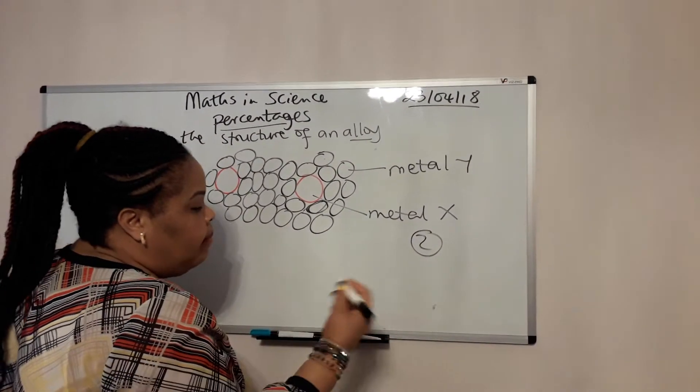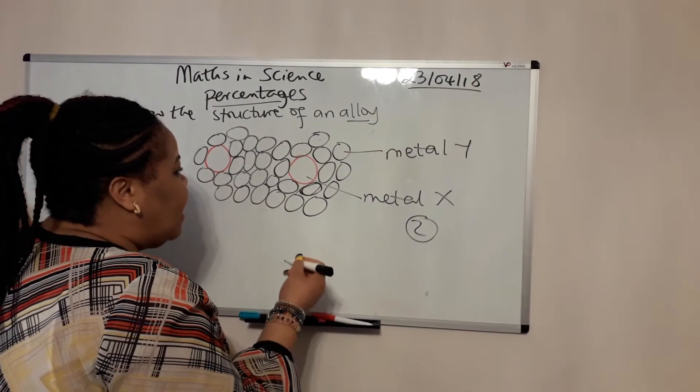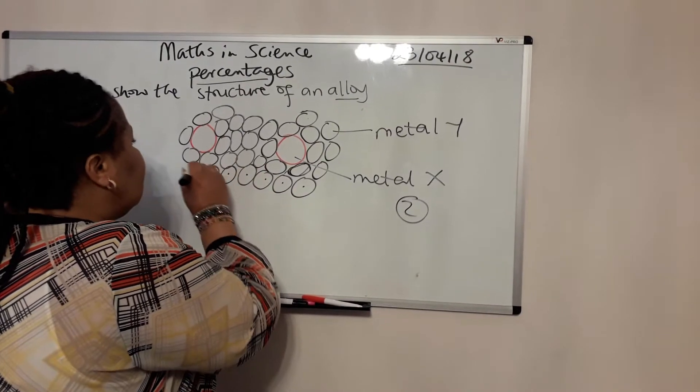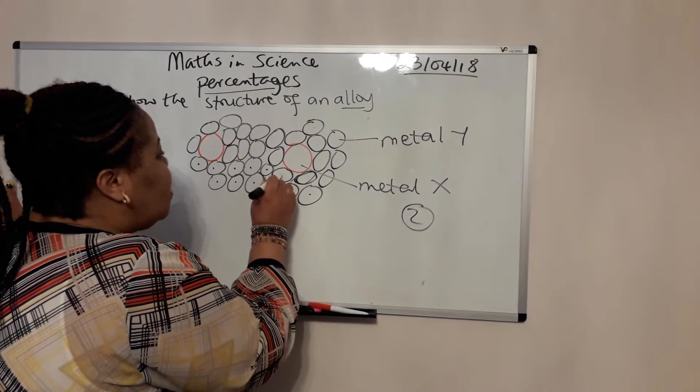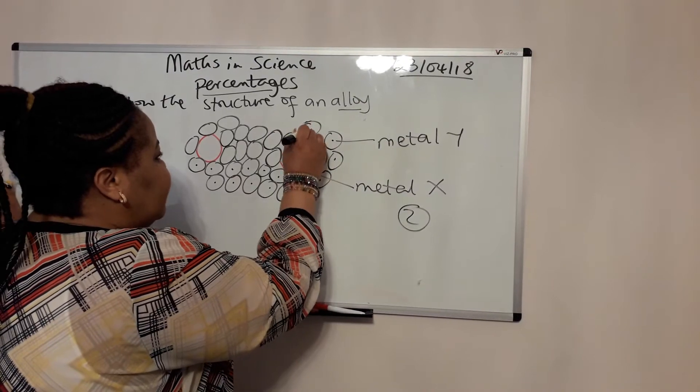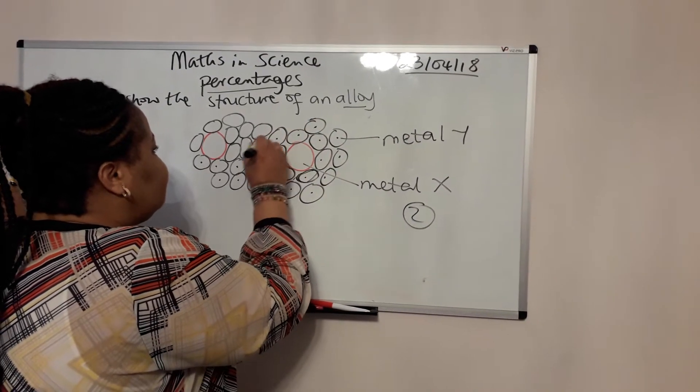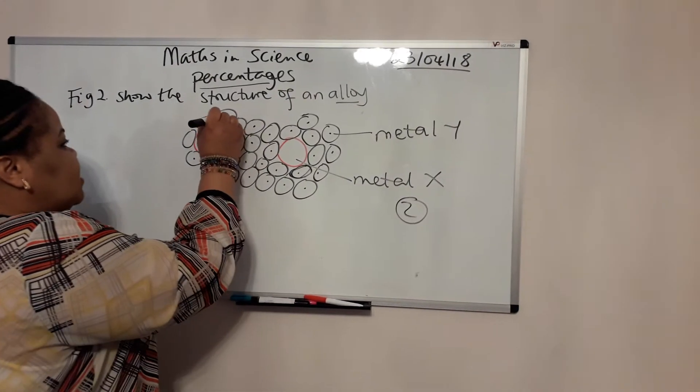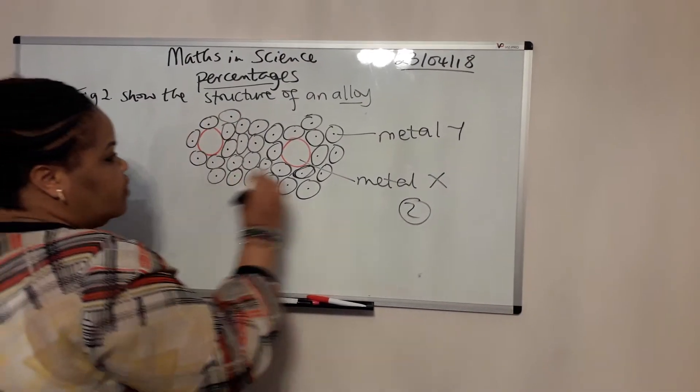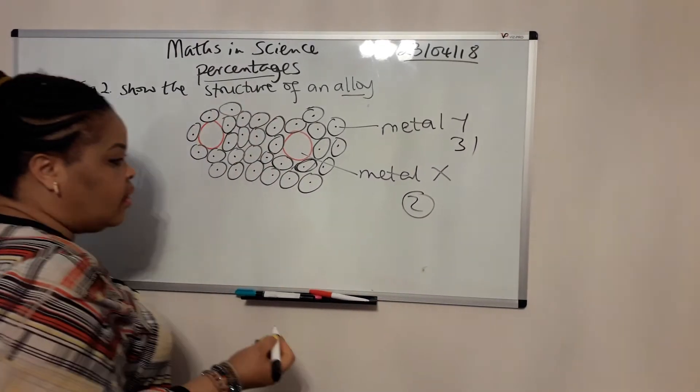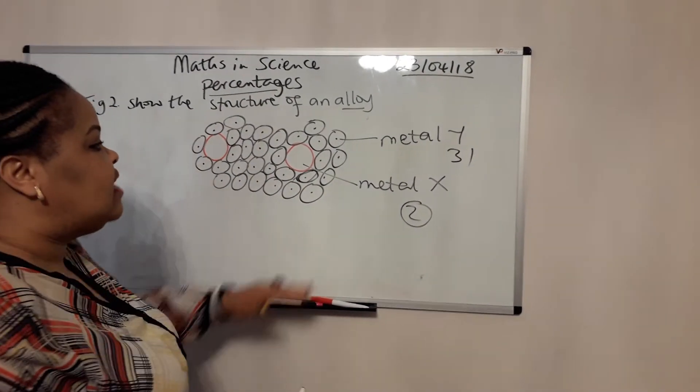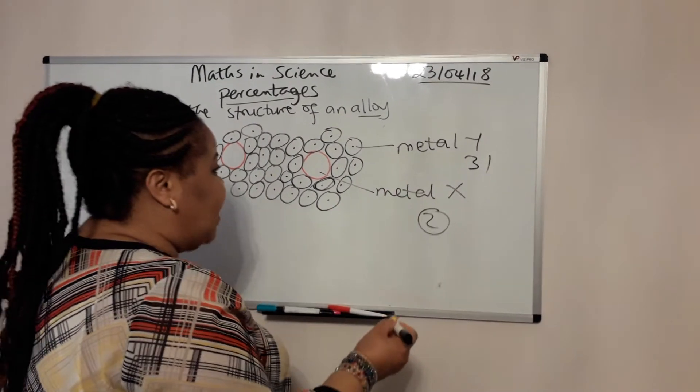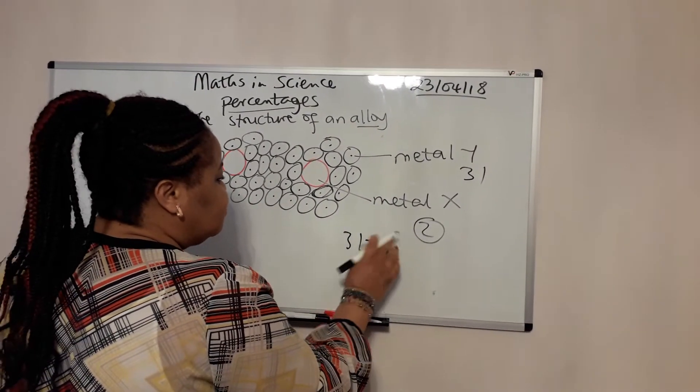But I've just drawn this quickly this morning without counting, so I'll just count: one, two, three, four, five... [counts to thirty-one]. So I have drawn a total of thirty-one. Okay, so you need to work out the percentage of metal X. So as you have two of that and thirty-one of that, you have a total of thirty-three.